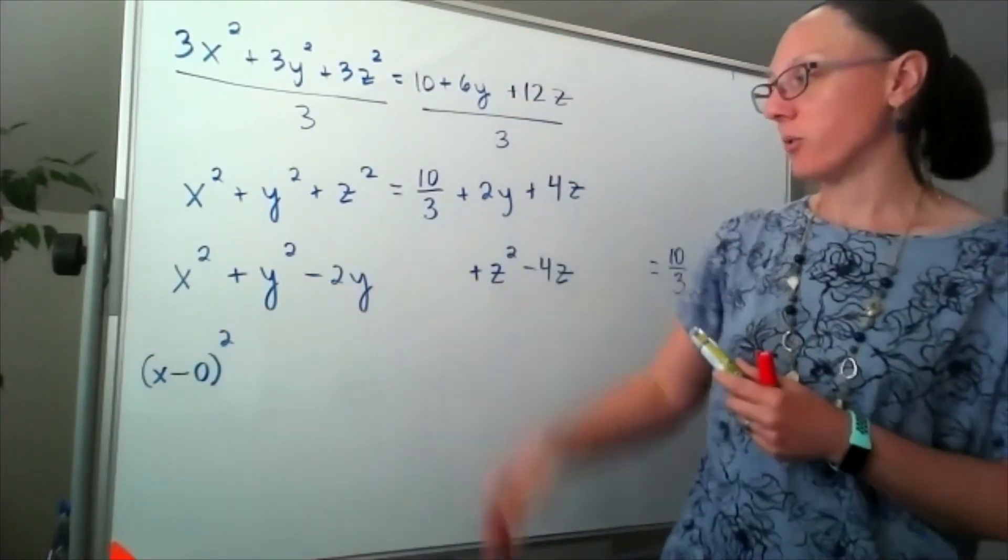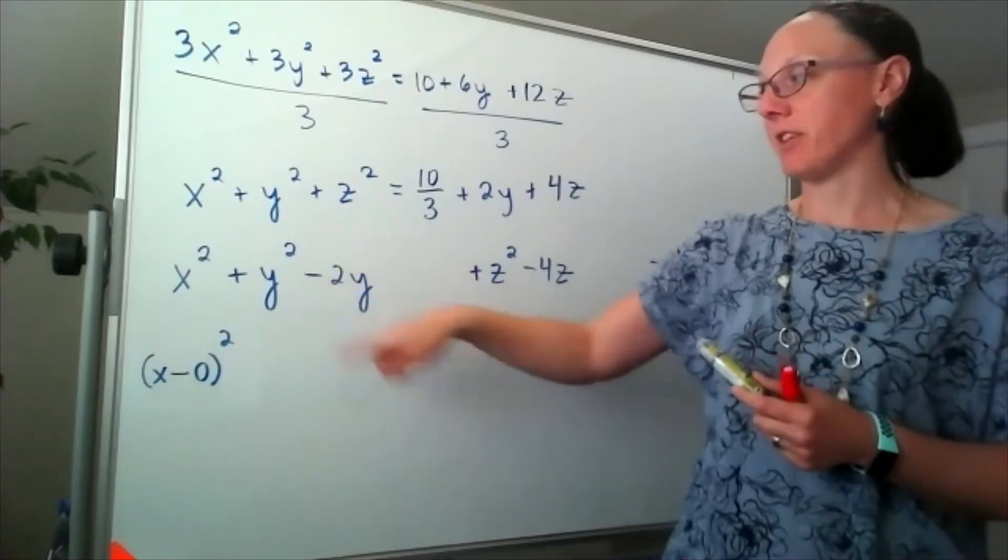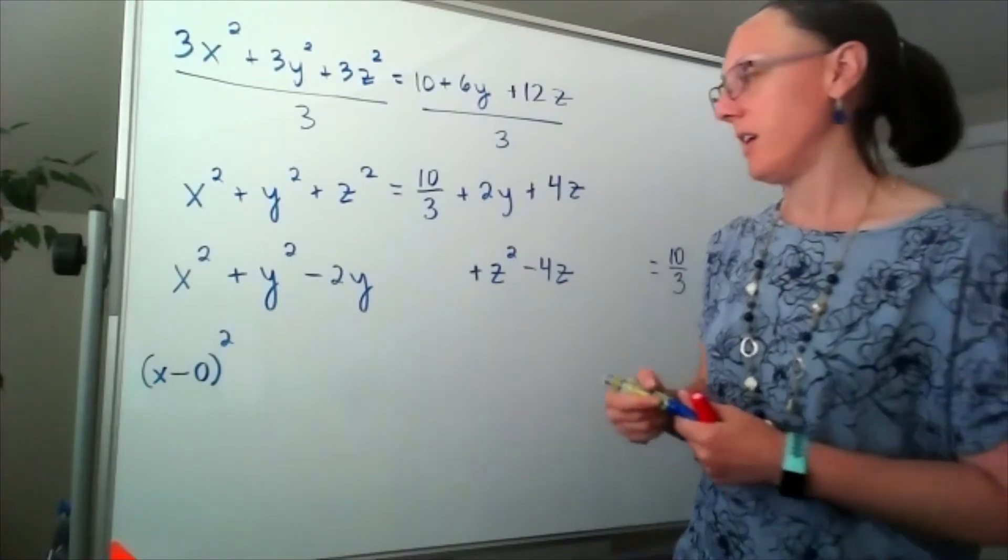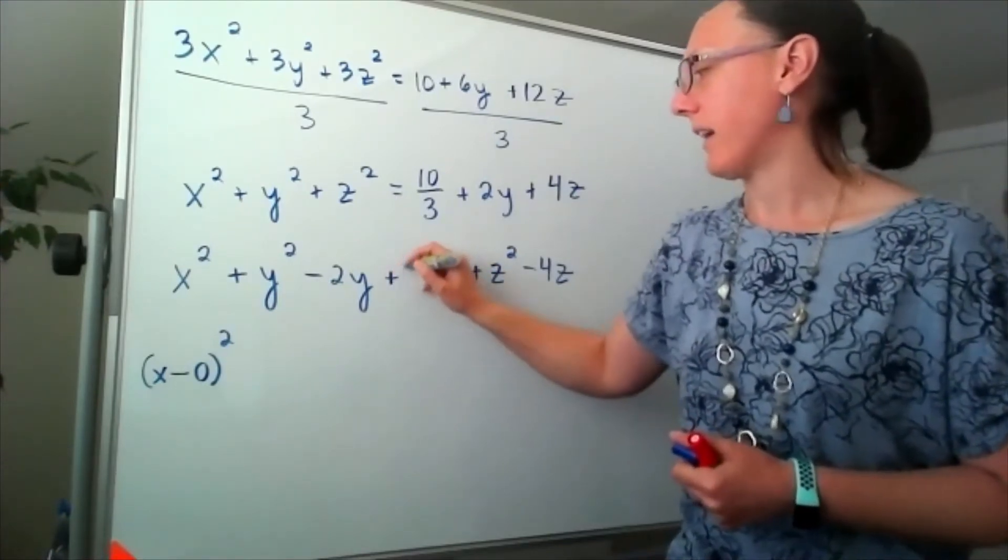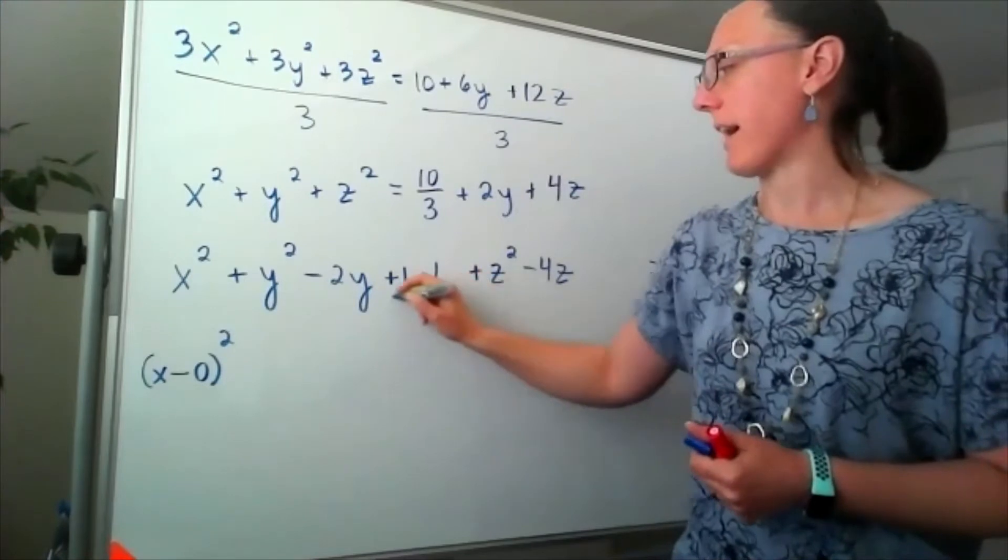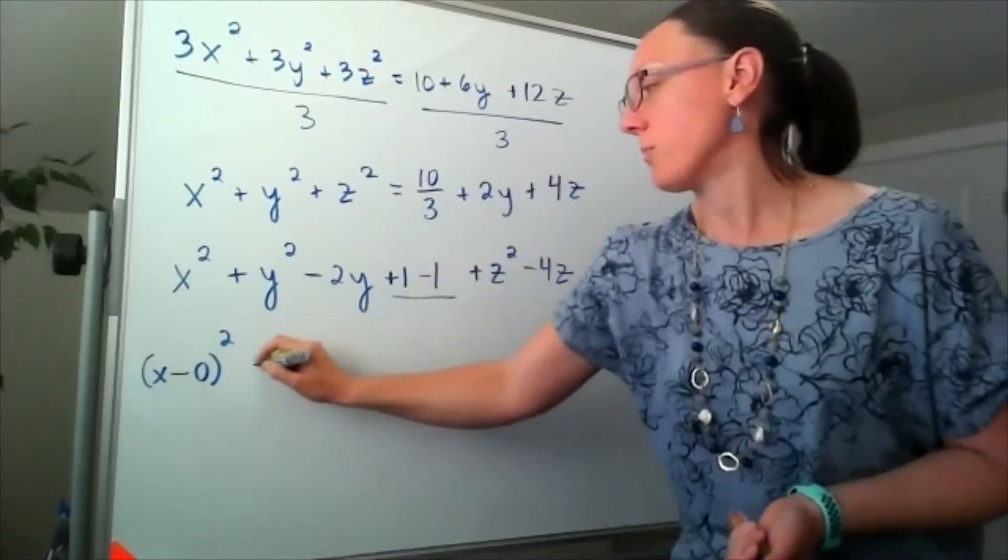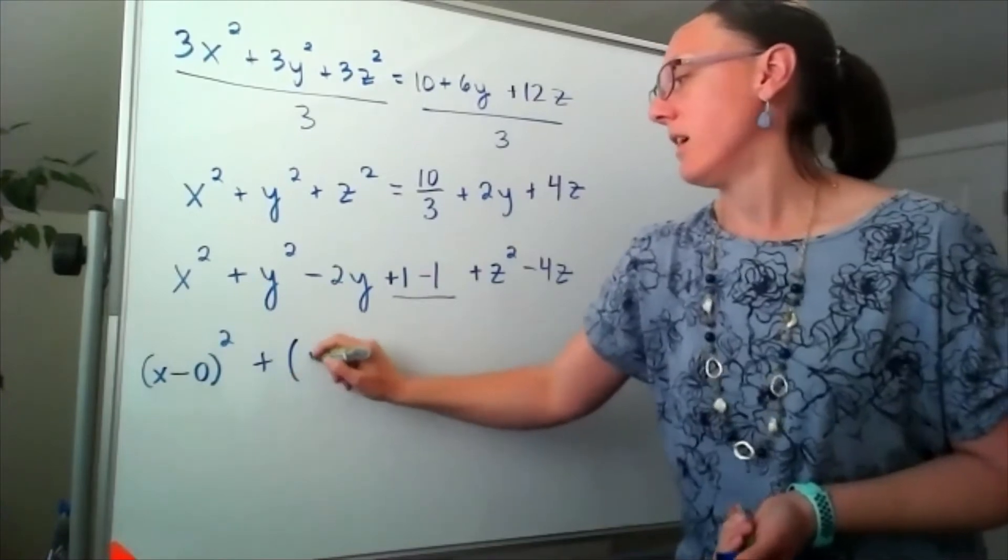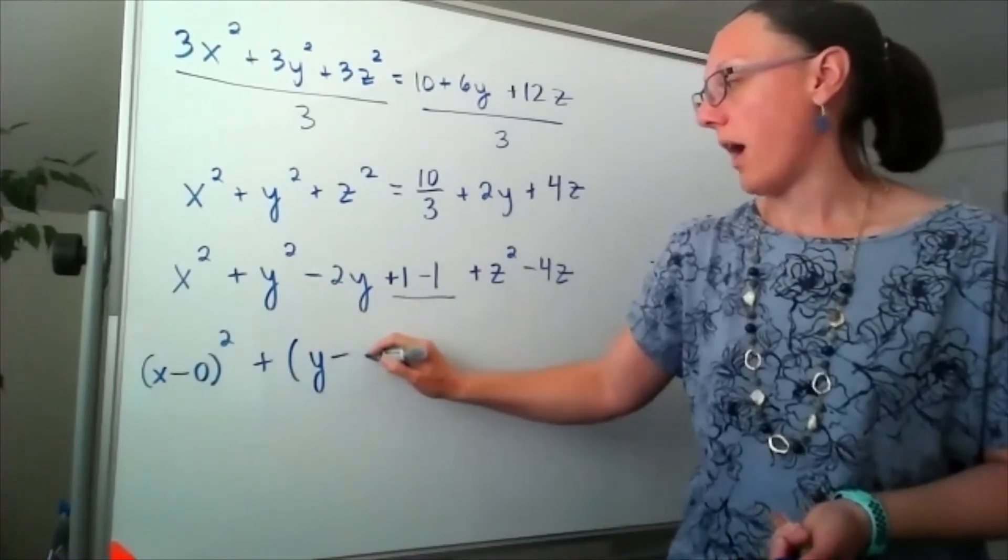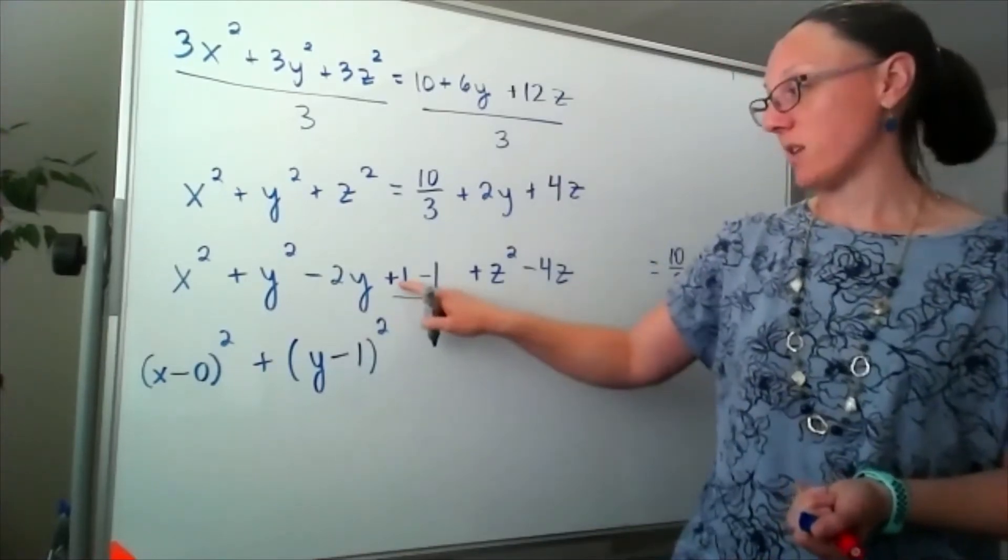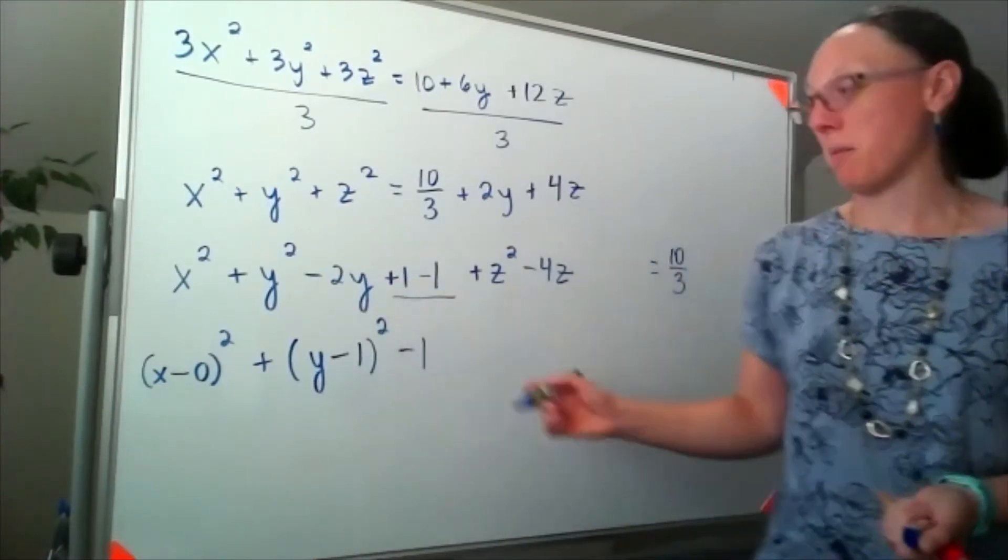Moving on to my y's, if I take half of the negative 2, I'll have negative 1. Squaring that would be a positive 1. So I would be adding in a 1 and subtracting off a 1, so that I'm not changing the problem, which means that those y terms, I can group together as a y minus 1, whole thing squared. That's using up the plus 1, but I've still got that minus 1.